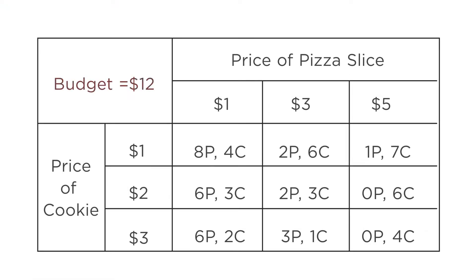For example, suppose you have a budget of $12, and your choice of pizza and cookies at different prices is shown by the table here. So if a pizza slice costs $3 and a cookie costs $1, you'd choose to buy two pizza slices and six cookies. And if a pizza slice costs $5 and a cookie costs $3, you wouldn't buy any pizza and would use all $12 to buy four cookies.